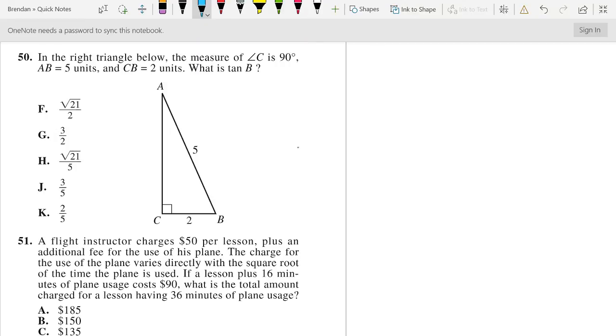On number 50, it wants to know what tangent of B is, but if you're familiar with SOHCAHTOA, tangent equals opposite over adjacent.